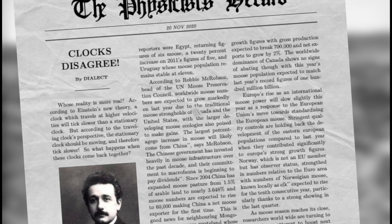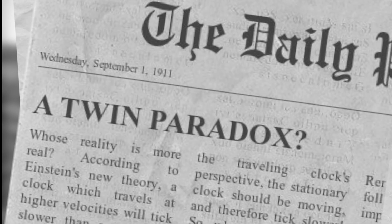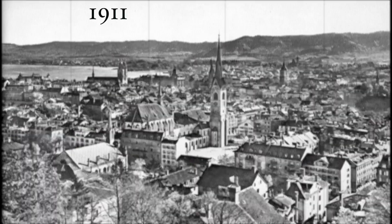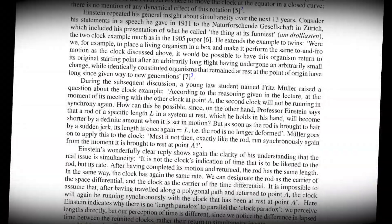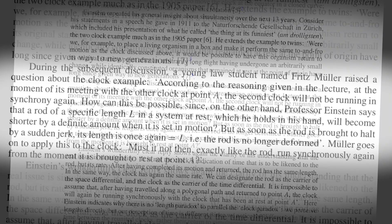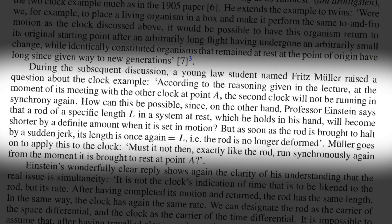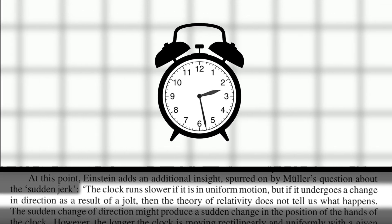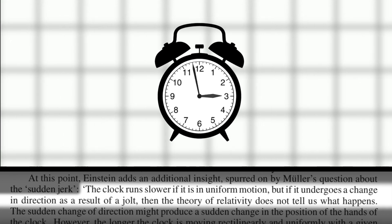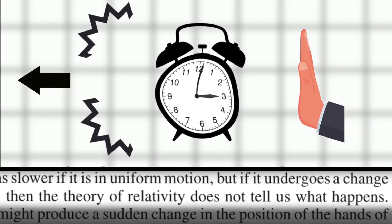The stationary clock could be considered traveling and therefore should also show less elapsed time. This contradiction, which would eventually become christened the Twin Paradox, was not addressed by Einstein until 1911 when he was giving a lecture in Zurich. There, when posed a question about the clock example by a student, he asserted that although a traveling clock runs slower if it is in uniform motion, if it undergoes a change of direction as the result of a jolt, then the theory of relativity does not tell us what happens.